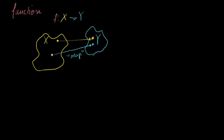This notation just says this is a mapping from one set x to another set y. You're probably saying this is very abstract — how does this relate to the functions I've seen in the past? Well, let me just write down a function you've probably seen a lot. You've dealt with f of x is equal to x squared. How would we write this in this notation?